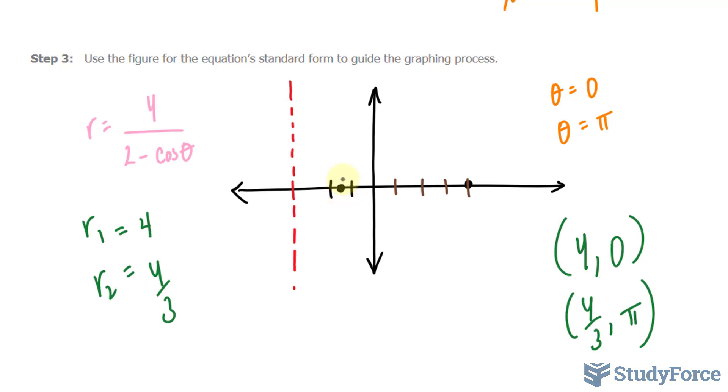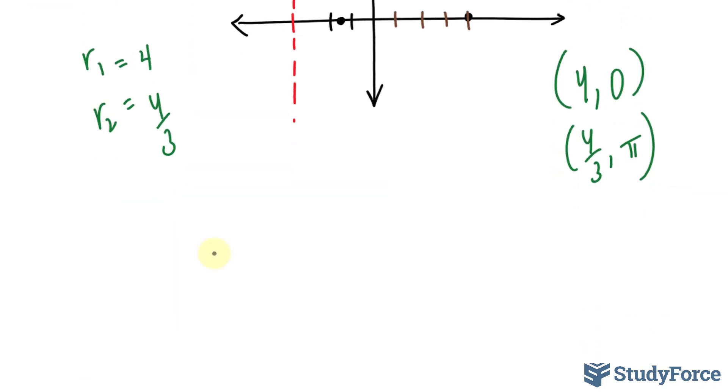So we have the vertices for our ellipse, but we still need a few more points, just to be more accurate, even though this is just a sketch. We will create a table for some random theta values between 0 and pi. So let's choose pi over 2, 2 pi over 3, 3 pi over 4, and 5 pi over 6. If you substitute these into your equation, your original equation, you should end up with values of 2, 1.6, 1.5, and 1.4. So let's graph these points.